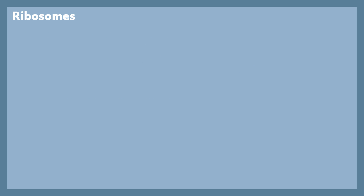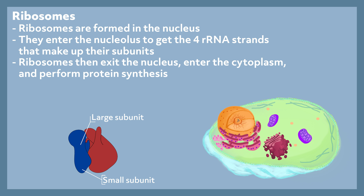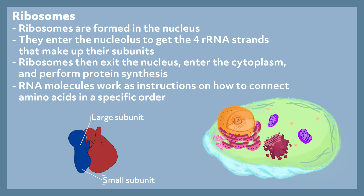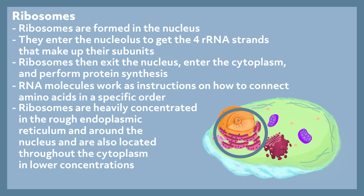Ribosomes. Ribosomes are formed in the nucleus, where they acquire the four RNA strands that make up their two subunits. They then exit the nucleus through the nuclear pores, enter the cytoplasm, and perform protein synthesis. The RNA molecules work as instructions on how to connect amino acids in a specific order to carry out their designated function. Ribosomes are heavily concentrated on the rough endoplasmic reticulum and around the nucleus, and also found throughout the cytoplasm in lower concentrations.